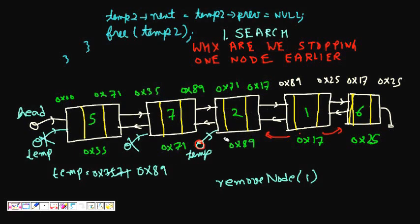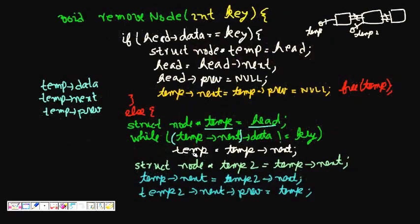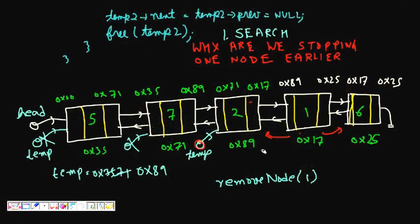What we need to do now: temp->next, which is pointing to 0x17, should become equal to 0x25. And the next node's previous, instead of 0x17, should become 0x89. To make that, we create struct node pointer temp2 = temp->next, so temp2 now points to the node we want to delete.